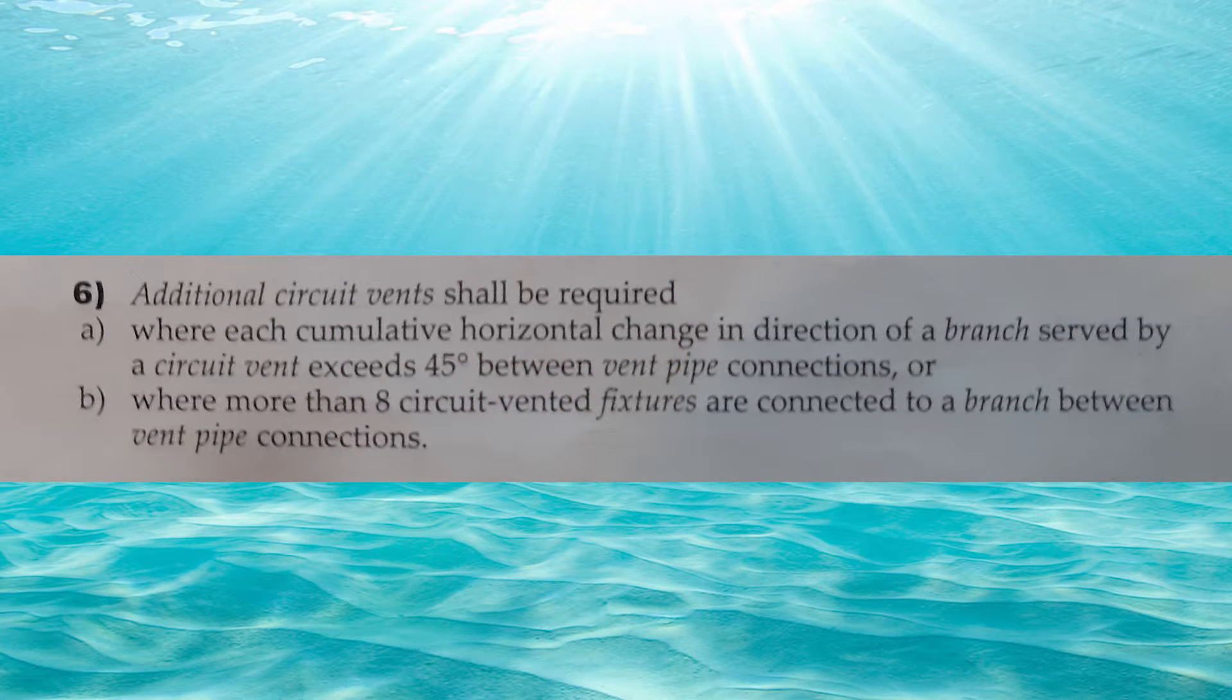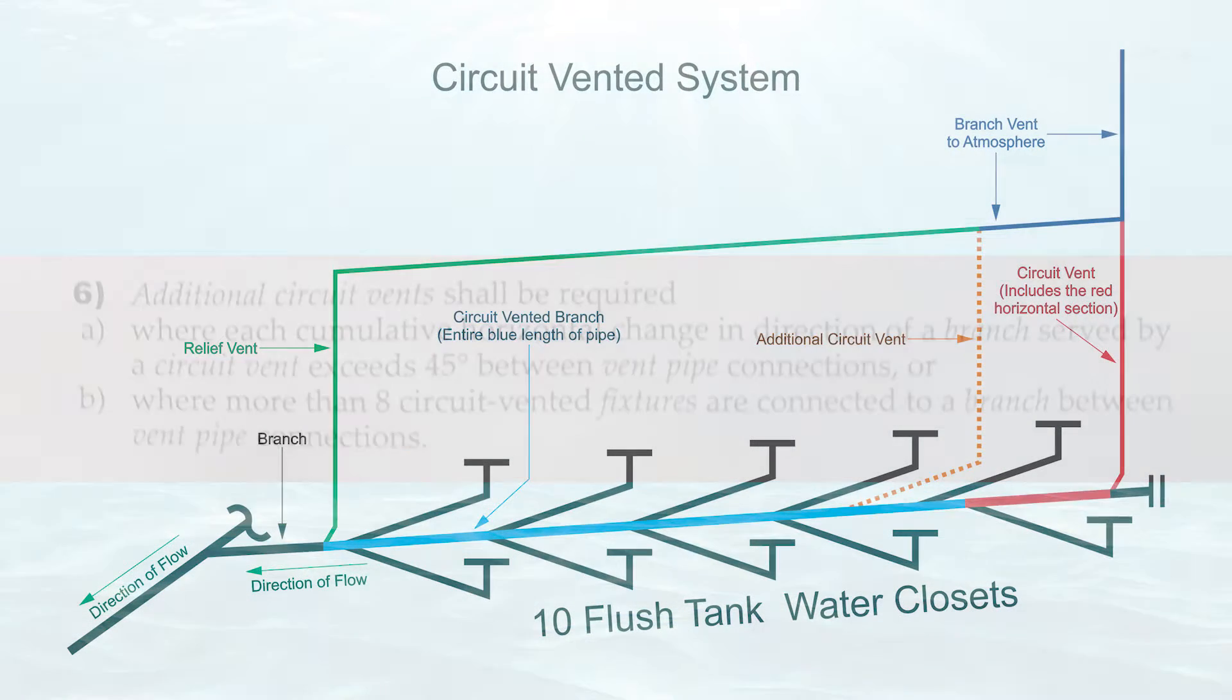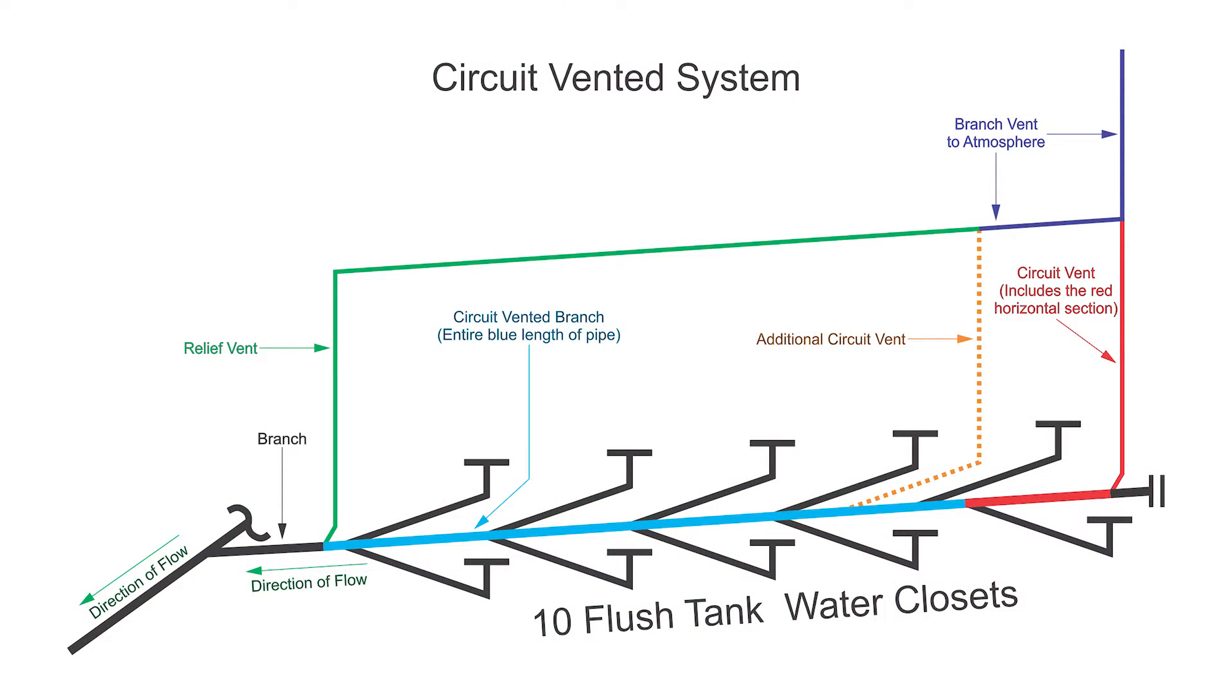Part 6b. Additional circuit vents shall be required where more than eight circuit vented fixtures are connected to a branch between vent pipe connections. In this picture we have 10 flush tank water closets and I have eight water closets on one side of the additional circuit vent and two on the other side of it. The key: maximum eight circuit vented fixtures between vent pipes.